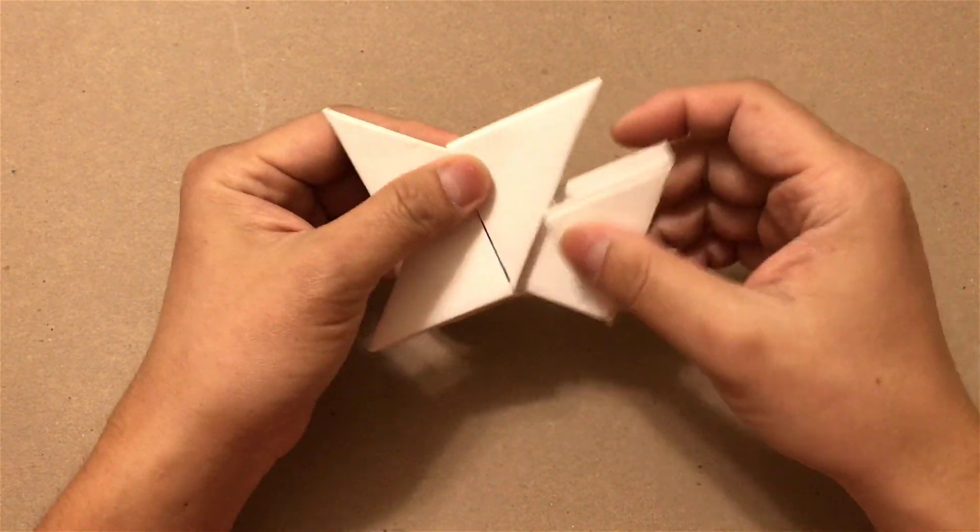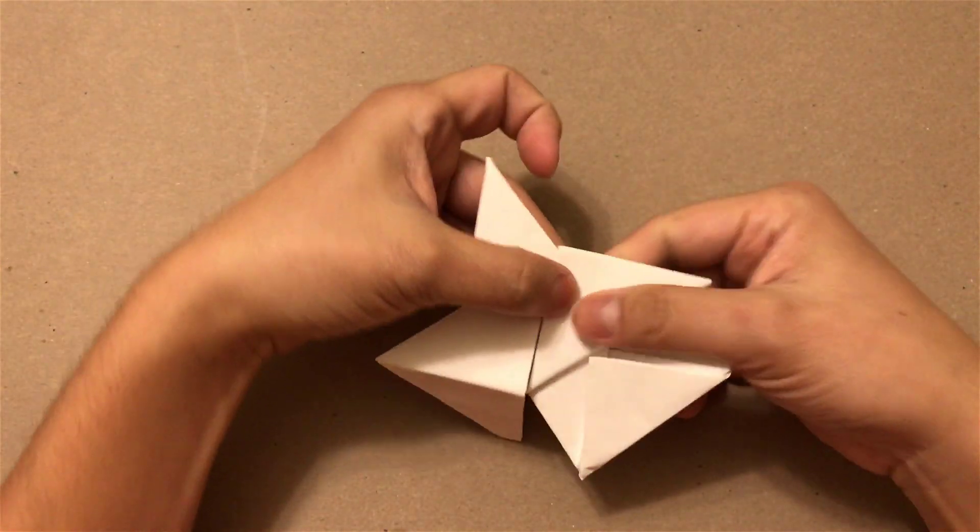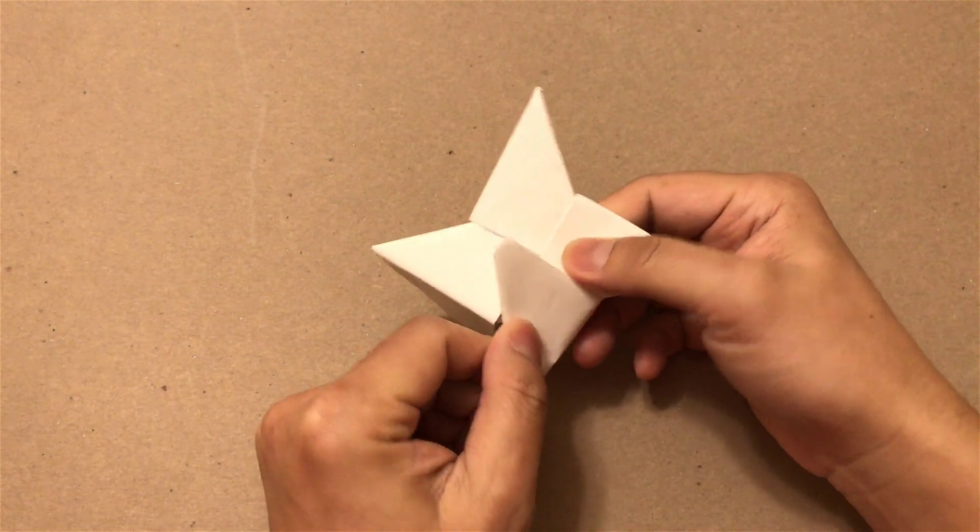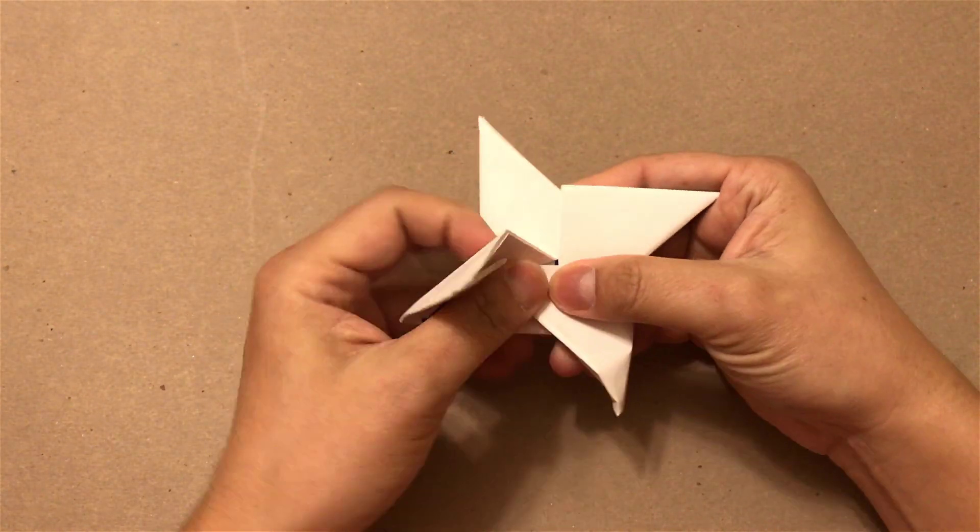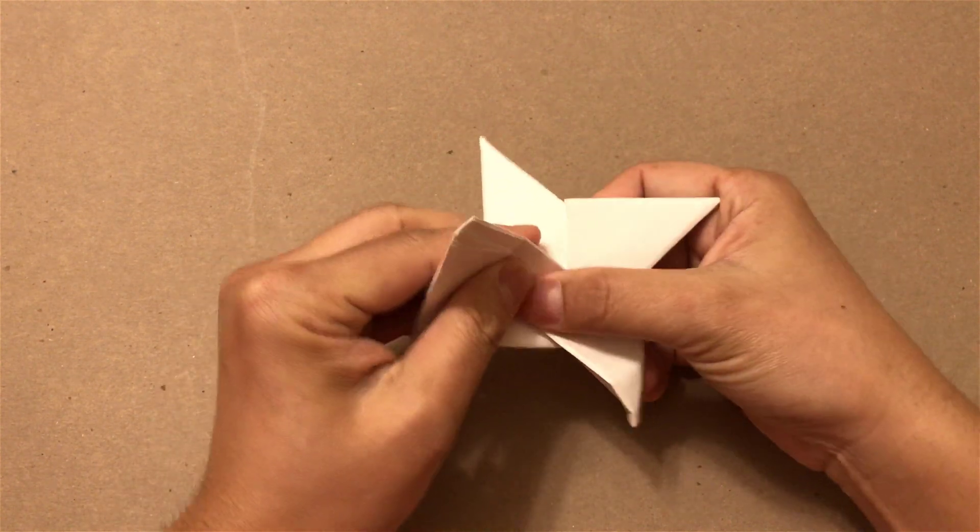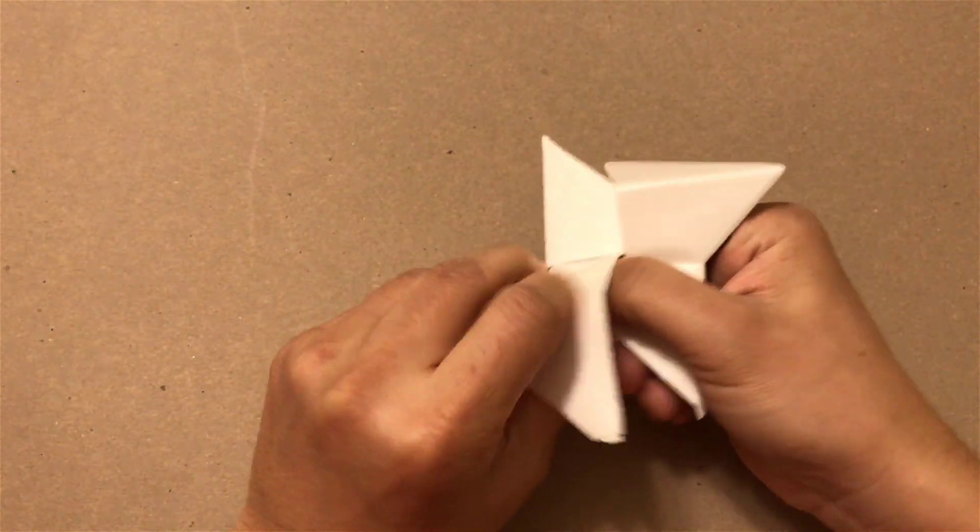And then same way on this end, you are going to fold it over by lifting this up so you can tuck it under the other triangle, and then you flip it over.